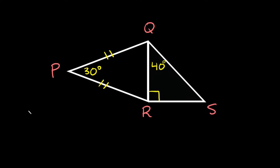What's up you freaking geniuses? So in this video I'm going to teach you how to find the shortest side of two connected triangles. So here you can see we have two triangles. We have this triangle QPR that's basically an isosceles triangle on its side, and then we also have this right triangle QRS, and you can see we have the right angle right there.